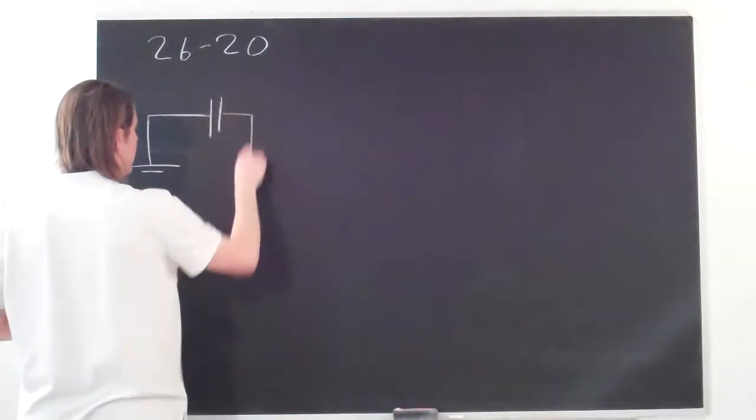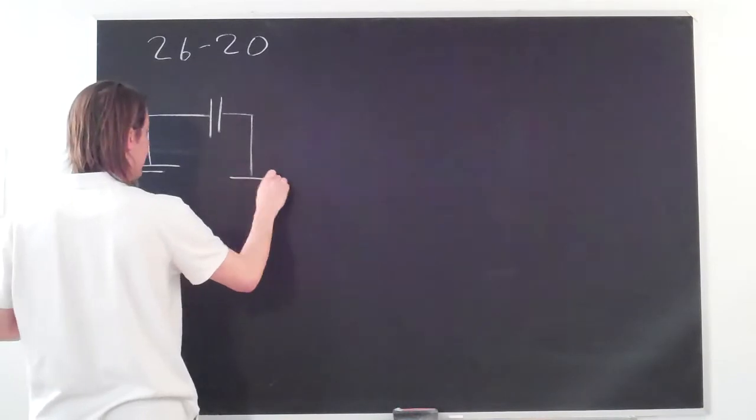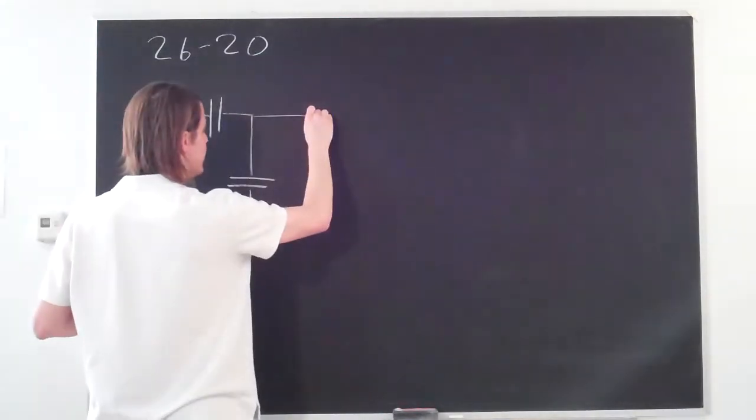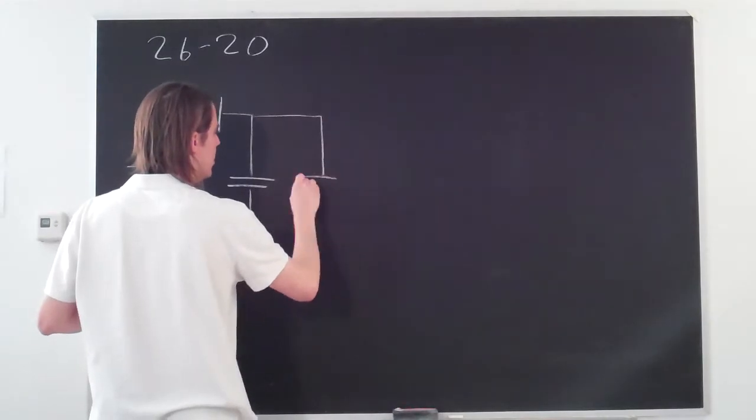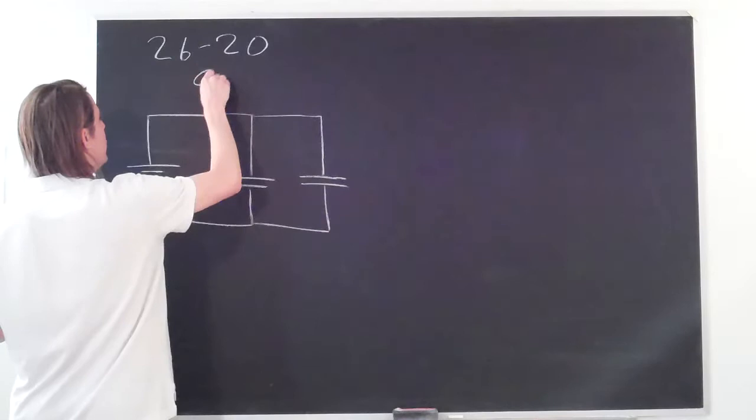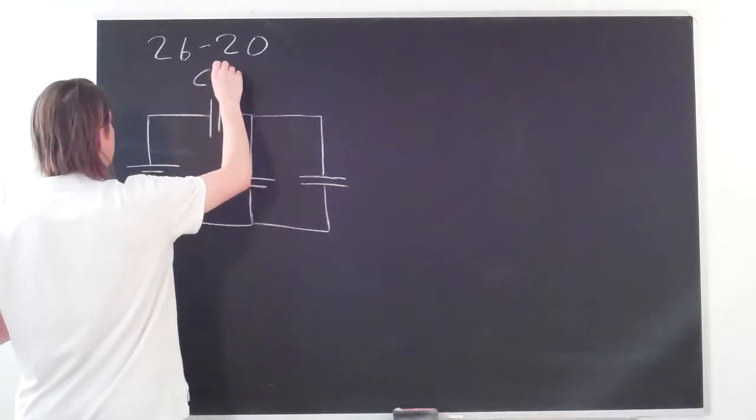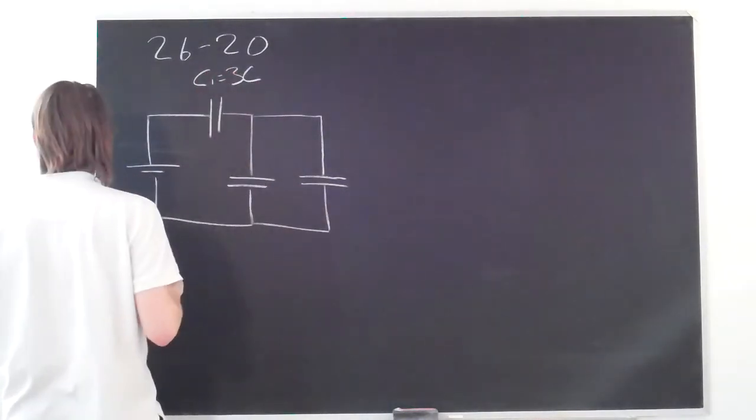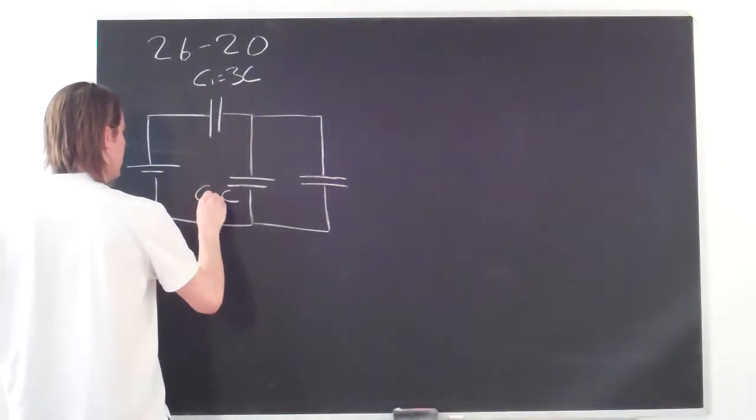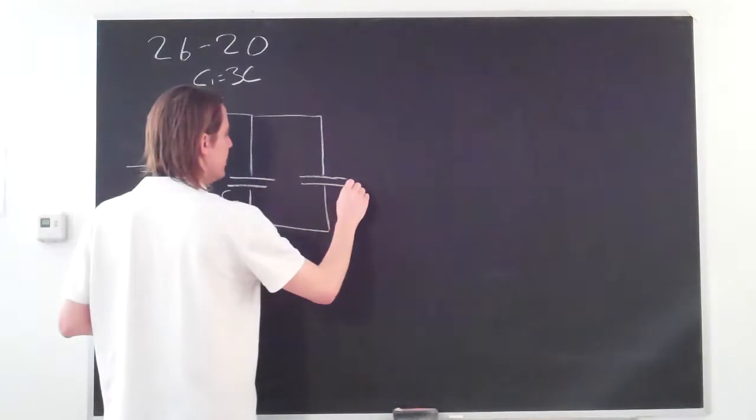So capacitors here, and capacitors here, and then another branch, capacitor there, like that. This is C1, and it equals 3C. C2 equals C. And C3 equals 5C.